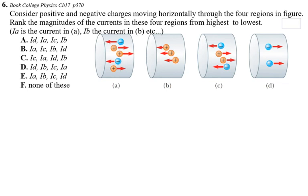Here's another interesting example: consider positive and negative charges moving horizontally through four regions in a figure, and rank the magnitudes of the currents from highest to lowest. The answer is A, then C, then B, then D. This is because current depends on how much charge passes per second through the area — not on whether it's positive or negative charge. That's an important conceptual point to remember for AP exam questions.